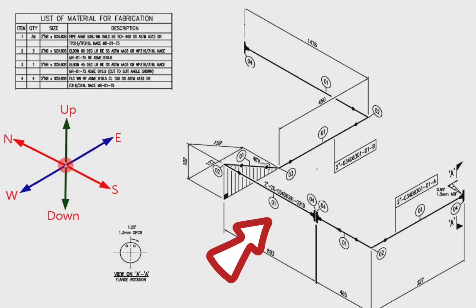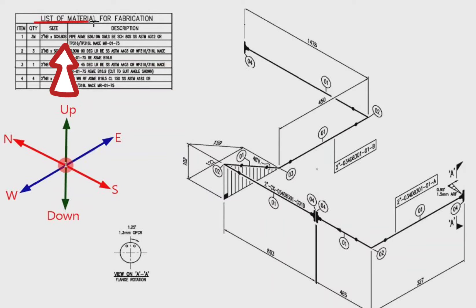This is a pipe isometric drawing. This is the list of material for fabrication. In this drawing there are two separate pipe spools. This is the first spool. This is the second spool.